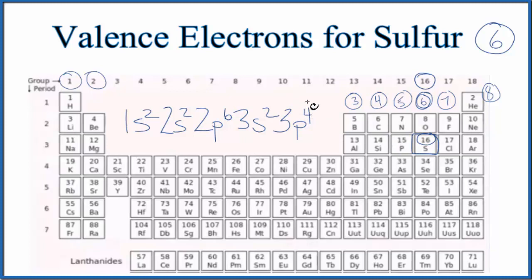But we're only interested in the valence electrons for sulfur. Those are the electrons in the highest energy level, the third energy level here. Think of it as the outer shell. In the third energy level, we have 2 plus 4, which gives us 6. That's what we found before. So there are 6 valence electrons for sulfur.